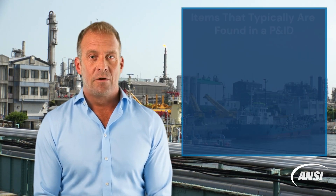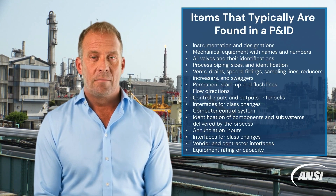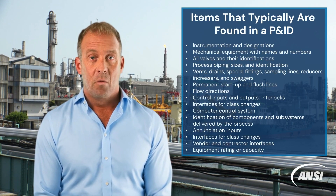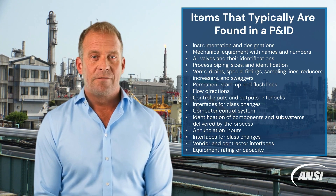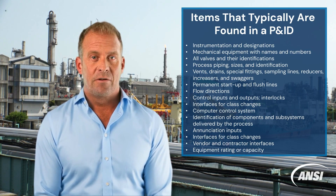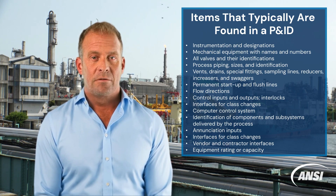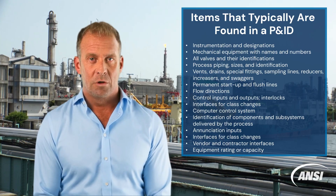Through a piping and instrumentation diagram you can get information like the mechanical and electrical details with names and numbers of a given system or process, all valves and their identifications, piping information such as sizes and material specifications, flow directions, the connection types from the controllers to the field devices, control inputs and outputs and more.